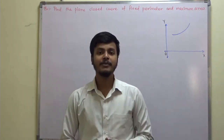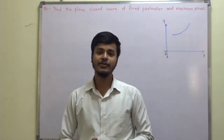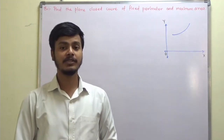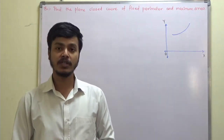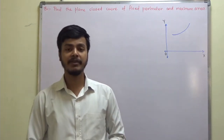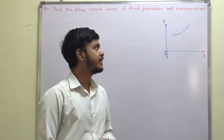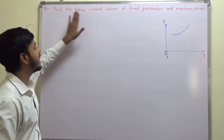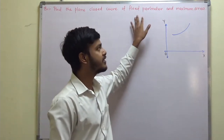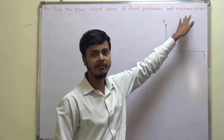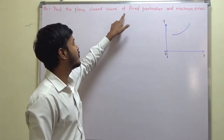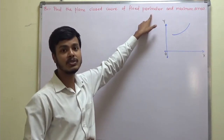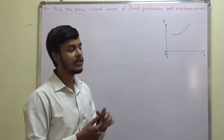Hello and welcome to this learning video. We are going to take a word problem on the isoperimetric topic. The problem says: find the plane closed curve of fixed perimeter and maximum area. Whenever it comes to a perimeter, it is talking about the length.